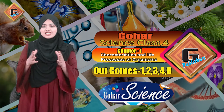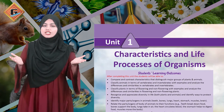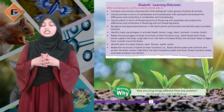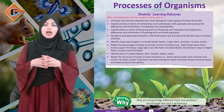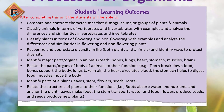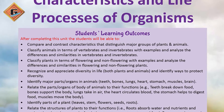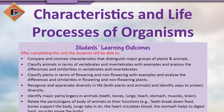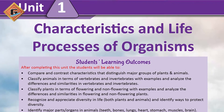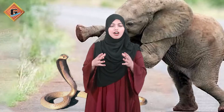Dear teachers, aaj hum Gohar Science Class 4 ka Chapter 1 start karengi jis ka naam hai 'Characteristics and Life Processes of Organisms'. Is chapter ke andar sabse pahle student ke mind me ek concept build up karne ja rahe hain ki kis tarah se classification ho rahi hai.